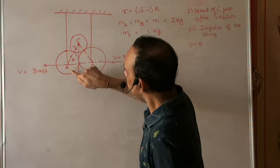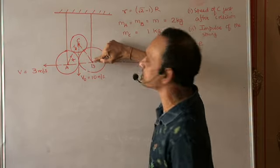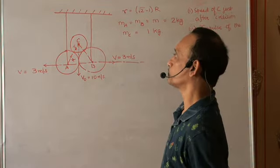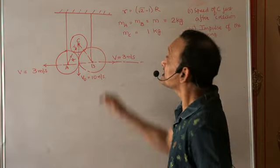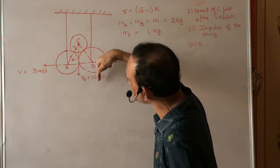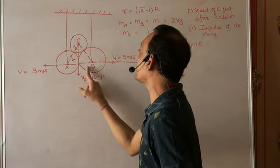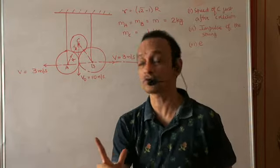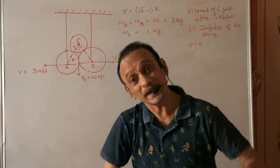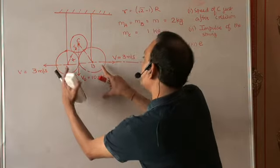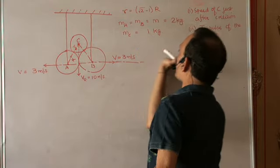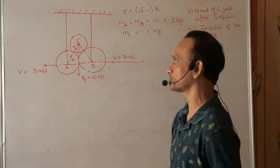The two spheres A and B are suspended with light inextensible strings connected to a fixed ceiling. A and B were at rest. C was moving symmetrically downwards with a velocity of 10 meters per second when it struck A and B symmetrically. Just after collision, A acquired a leftward velocity of 3 meters per second and B acquired a rightward velocity of 3 meters per second.